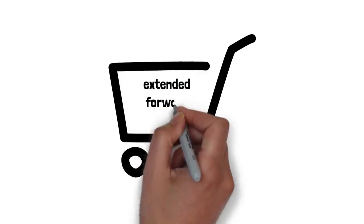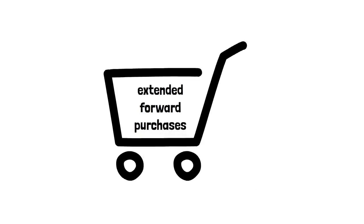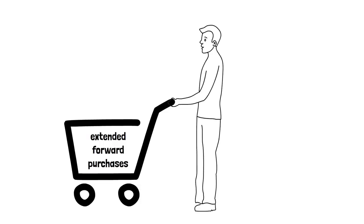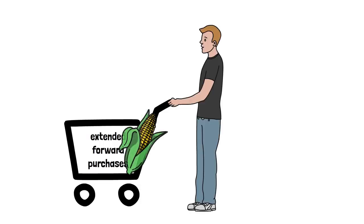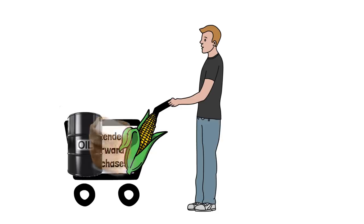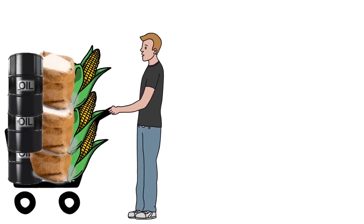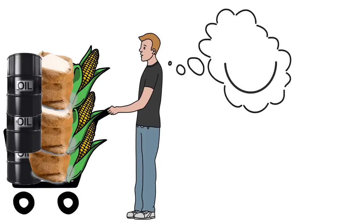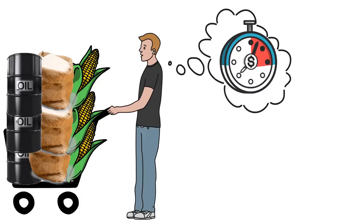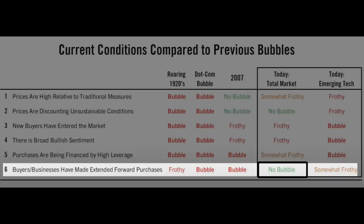The last signal that Dalio looks at is buyers slash businesses having extended forward purchases. So an example that we can use for what Dalio is talking about here is buying commodities. Normally, you would just buy commodities like corn or sugar or oil whenever you needed it. A forward purchase is when you buy more of these than you need because you're worried about prices going up and you have to spend more, aka inflation. If there's extended forward purchases, it means more people are doing these to a greater extent and it's a sign of investors being scared of worrying economic conditions to come. So right now, in today's total market, there is no bubble when it comes to extended forward purchases. The emerging tech, it reads somewhat frothy.